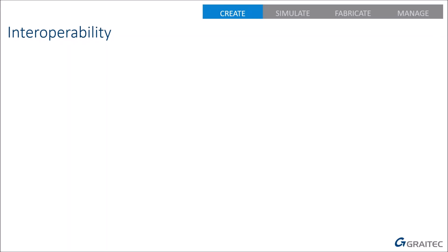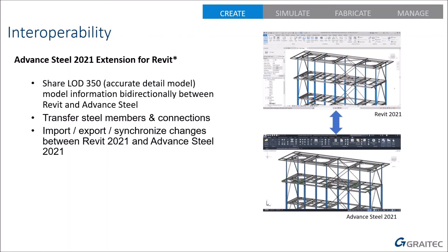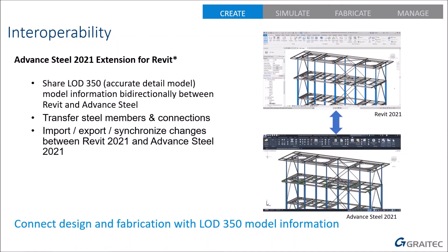For interoperability, the Advanced Steel extension for Revit has been updated so Advanced Steel 2021 and Revit 2021 can share the SMLX file. The SMLX format is vastly better than any other exchange format between the two programs — it transfers intelligent beams and even intelligent joints that can be edited in Revit the same as in Advanced Steel. The extension is a Revit plugin that Revit users need to download and install separately.